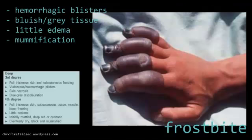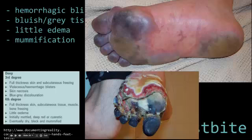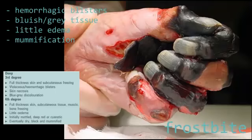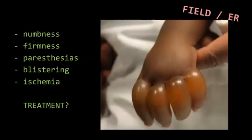Deep frostbite, third and fourth degree, causes more hemorrhagic blisters. A lot of times you have that bluish-gray tinge to the tissue, especially on arrival, and you see a little less edema. This also leads to mummification — you can see it at the fingertips here, or in this example. During presentation you can see those dusky ischemic toes, and here later, mummified after the tissue is necrosed. Here's one more example of mummification weeks after the injury.